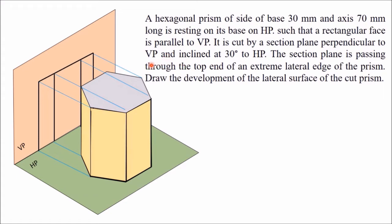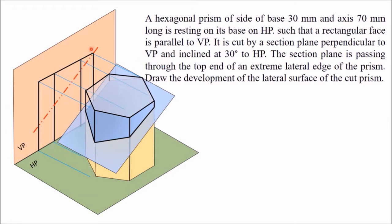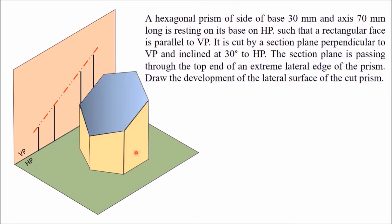The section plane is perpendicular to VP, so it will appear as a line in the front view. This line is inclined at 30 degrees from the XY line — meaning the section plane is 30 degrees from HP. The section plane passes through the top end of the extreme lateral edge of the prism. This section line passes through that point. After cutting, the top part is removed, and we have to draw the development of the lateral surface of the remaining cut prism.